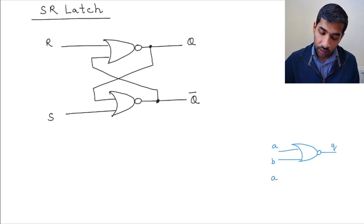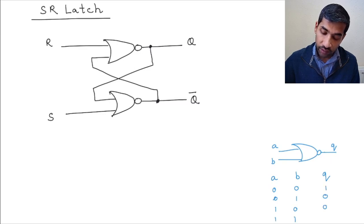So what would be the truth table of a NOR gate? A, B, Q. So 0, 0, 0, 1, 1, 0, and 1, 1. And basically the output is 1, 0, 0, 0.